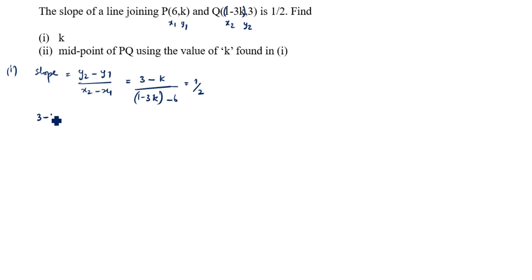So 3 minus k divided by 1 minus 3k minus 6 is equal to 1/2. Minus 6 plus 1 is minus 5. So (3-k)/(-3k-5) equal to 1/2. Cross multiply. So 2(3-k) equal to -3k-5. We will multiply inside the bracket. 2×3 is 6 minus 2k is equal to -3k-5.